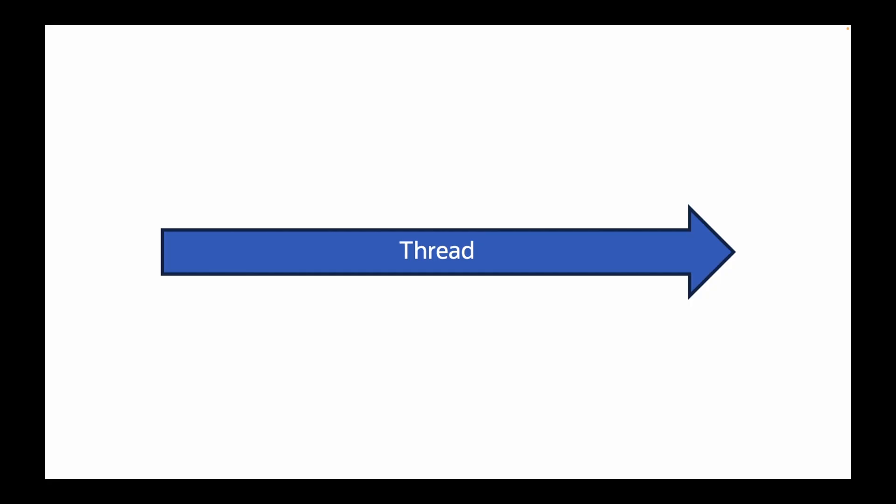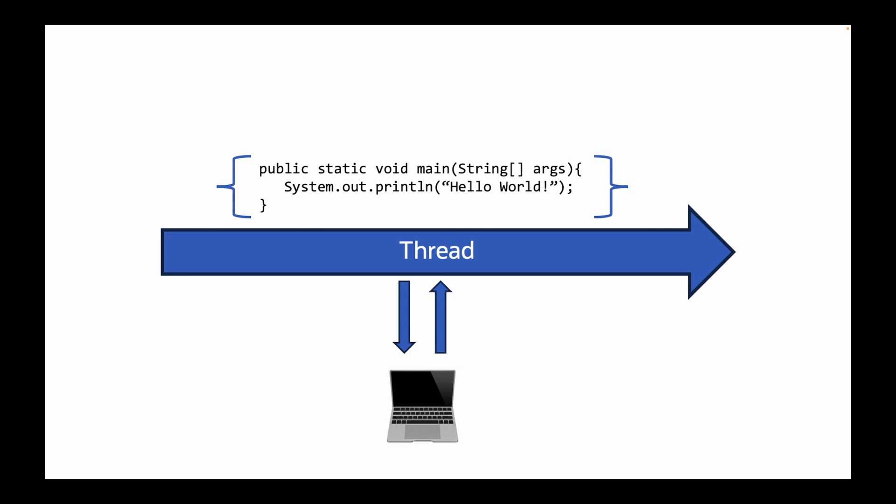Threads are the means by which all code is executed on the JVM. Every statement and method is executed in a thread. Historically threads in Java have been a relatively expensive resource, as they typically mapped one to one to threads supplied by the operating system.